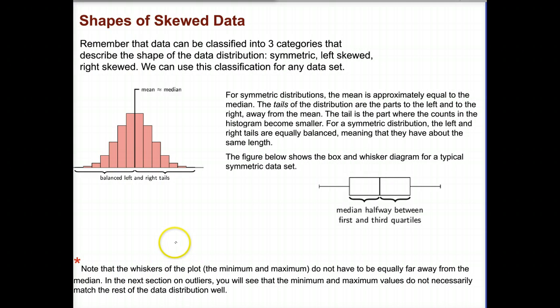So now let's look at the shapes. Remember that earlier in the lesson, we classified data into three categories. We can describe the data as symmetric, left skewed, or right skewed. And we can use that classification for any data set. So here is a symmetric, symmetrical data set, bell-shaped, normal distribution. The key to this is that your mean, median, and mode are the same exact number. They all equal each other. And then if you notice the tails on the distributions out here to the left, out here to the right, they are symmetric.